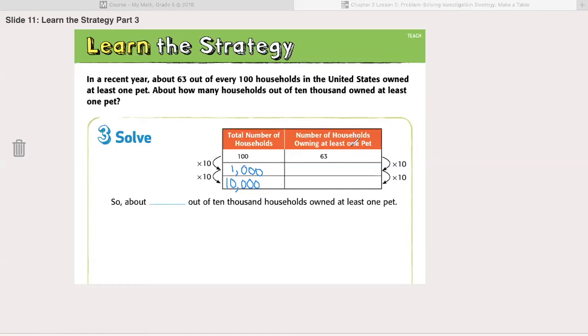So how does that help us? On the right hand side we are going to do the same to our number 63, just like we did to these, in order for it to be equal. In order for that 63 out of 100 to still hold true, we need to do the same to the 63 as we did to the 100. So we're multiplying by 10. When we multiply by 10, we add a zero. The zero from the 10 transfers to the number we're multiplying it by. So 63 becomes 630, and 630 then becomes 6,300. So about 6,300 out of 10,000 households owned at least one pet.